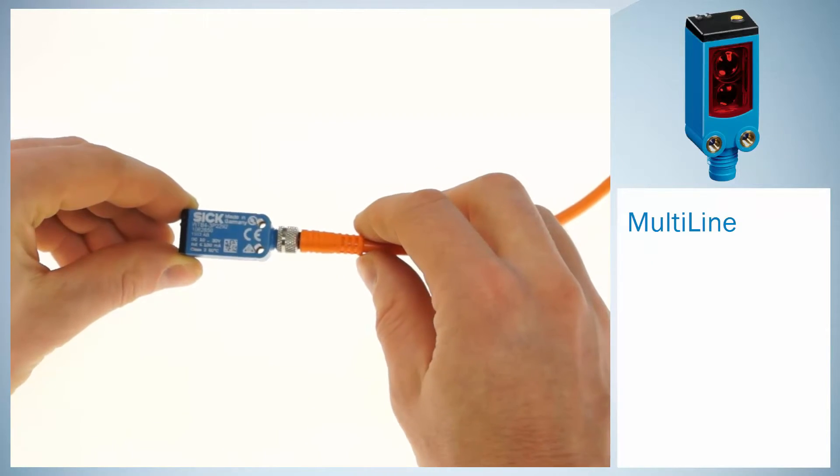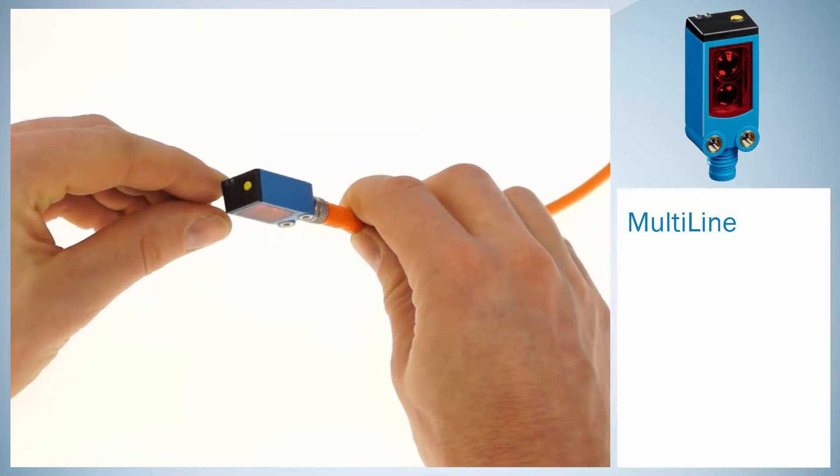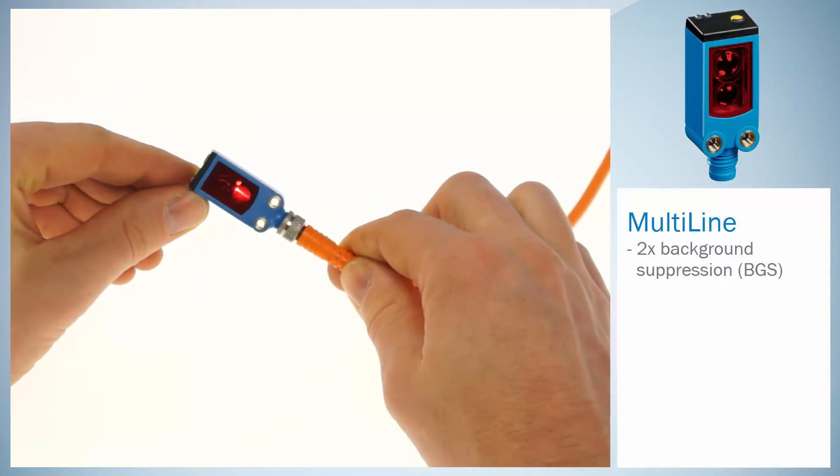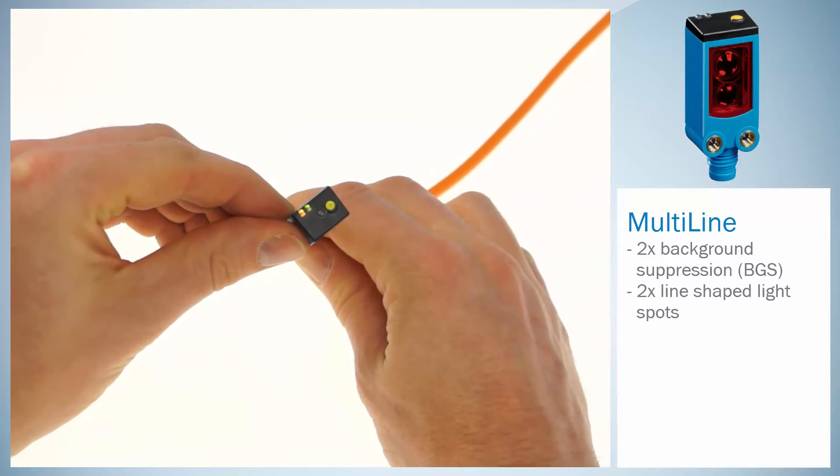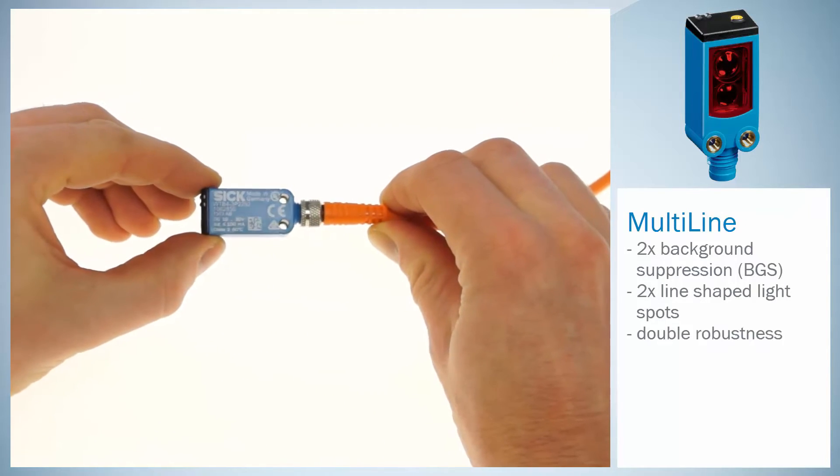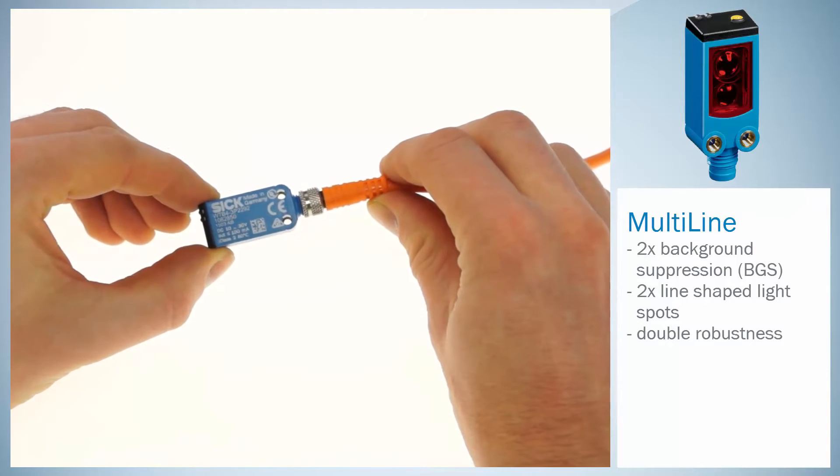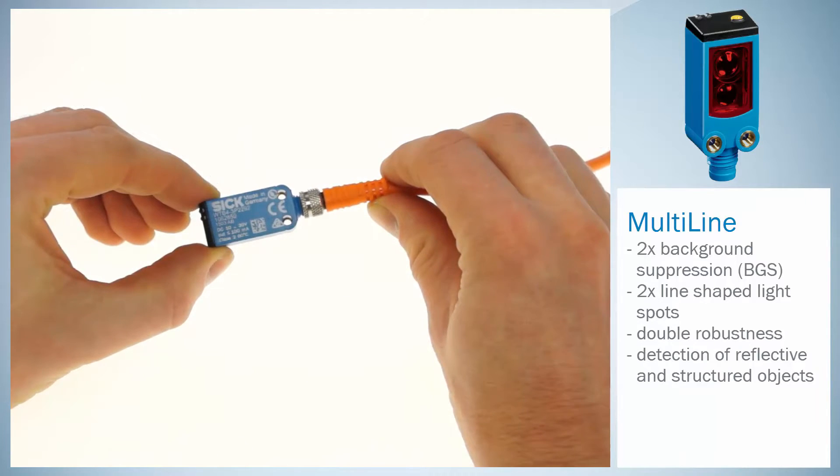In this tutorial we introduce our multi-line sensor. In the multi-line sensor, two background suppression cores combined with two line-shaped light spots perform their work and thus offer double robustness and security in detecting reflective and structured objects.